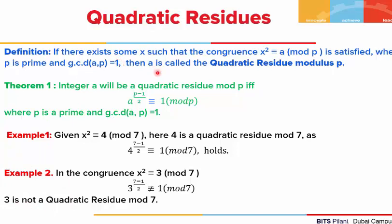Now the question is: do all such a qualify to be quadratic residues? Not necessarily. So how do we find that? We use the theorem: given an integer a, it will be a quadratic residue modulus p if and only if a^((p-1)/2) ≡ 1 (mod p), where the GCD of a and p is equal to 1.